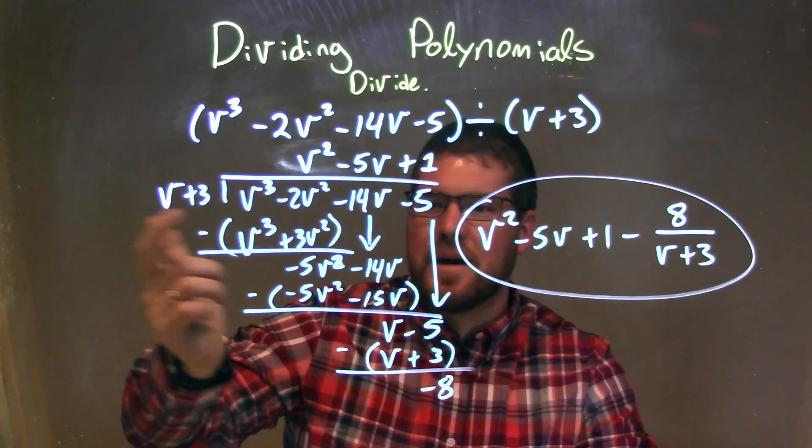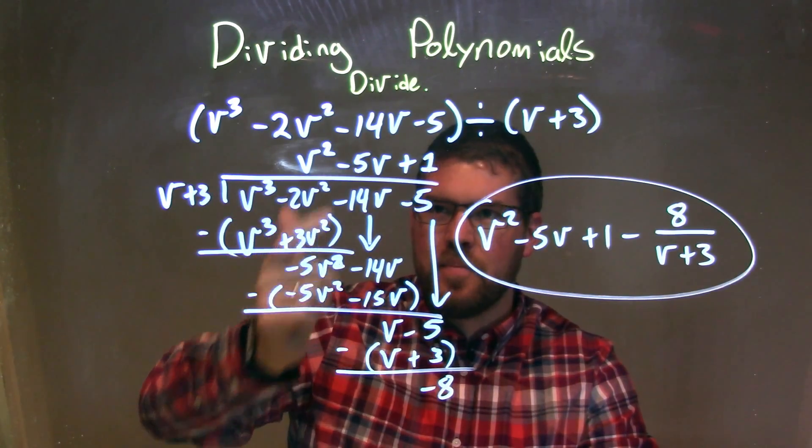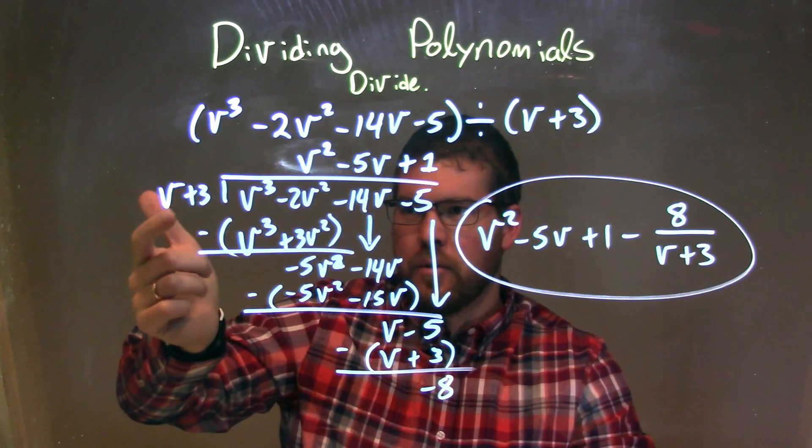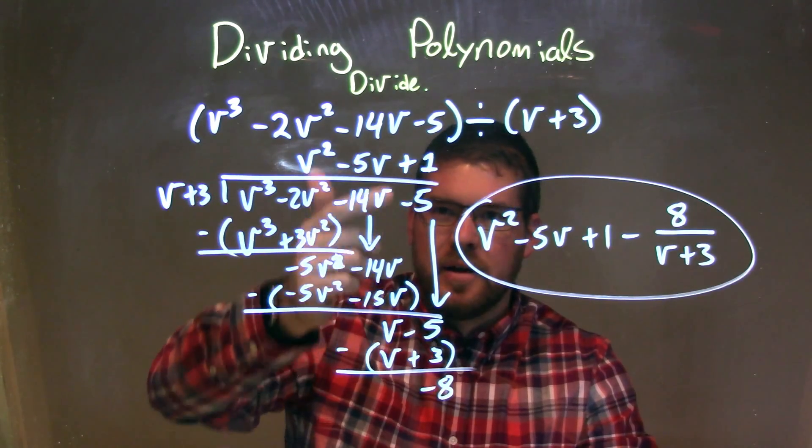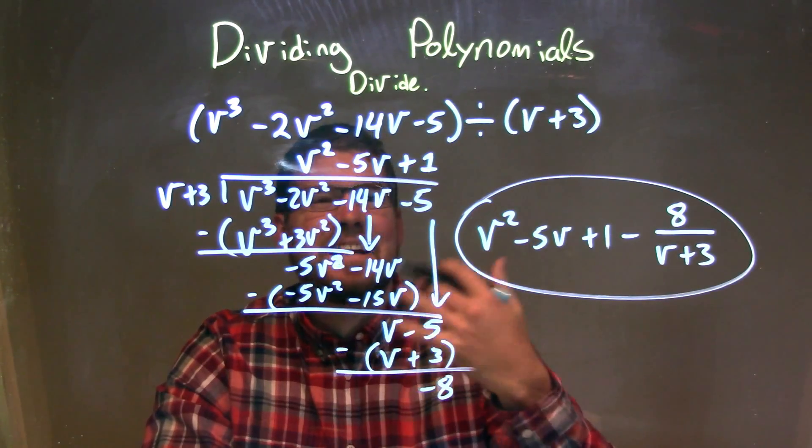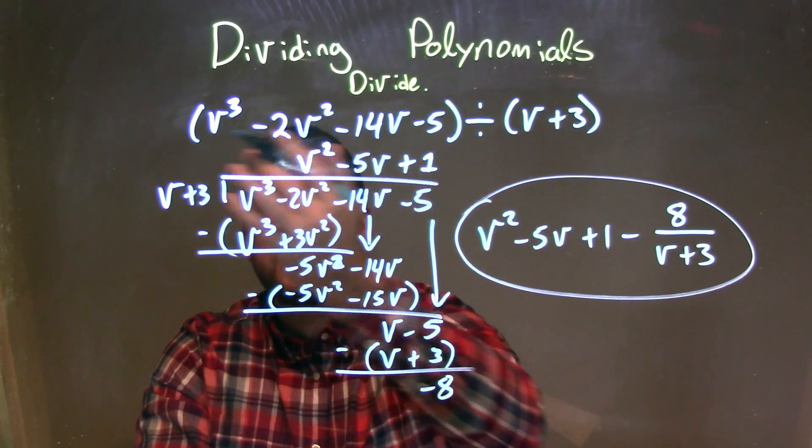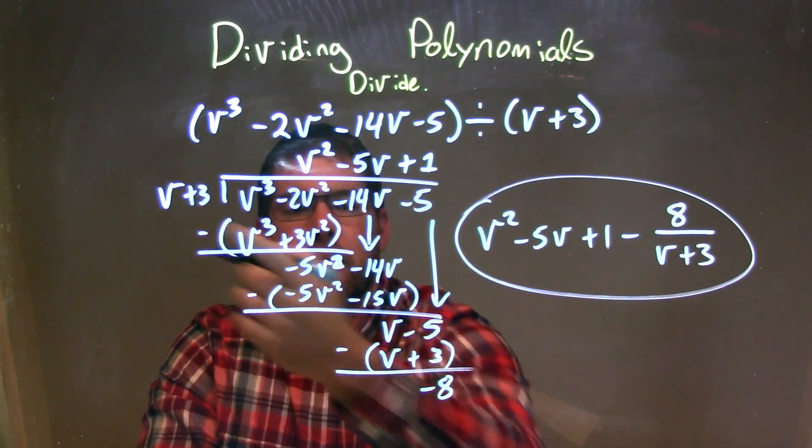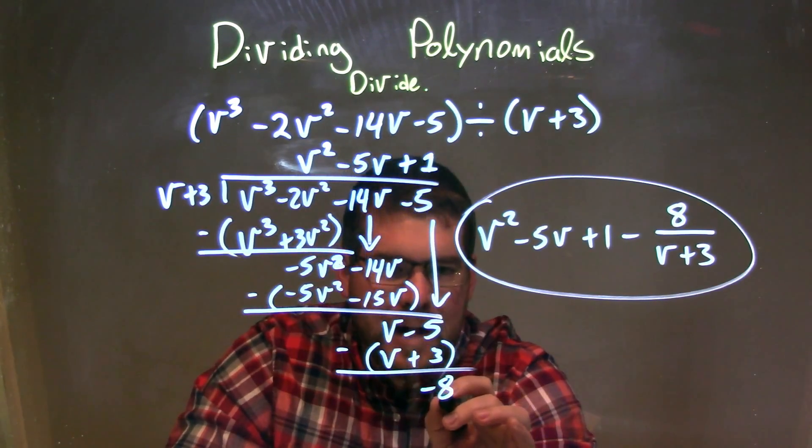Same thing. What times v gave me a -5v²? That's a -5v. Multiply -5v to both parts here. And then I subtract it, giving me just a positive v there. Brought to the -5. Again, same question again. What times v gives me v, which is just 1. Multiply 1 to both parts. I subtracted and got a -8.